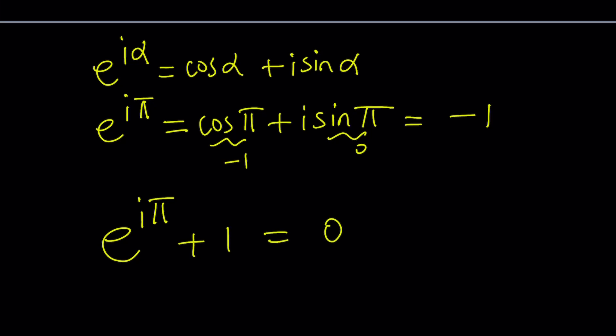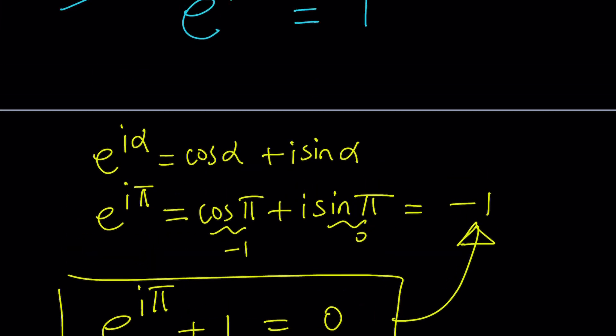And you probably know this famous identity, which is super-duper awesome, by the way. e to the power i pi plus 1 equals 0. A transcendental number, an irrational number, times complex plus 1, which is an integer, equals 0. A very interesting identity, to be honest with you. So we could also get it directly from here, e to the power i pi, if you already know this identity.